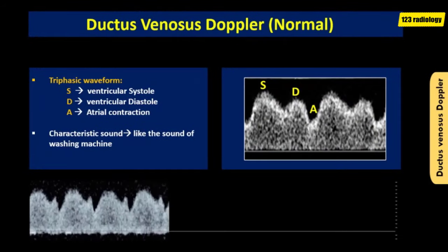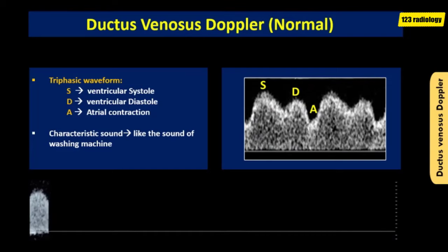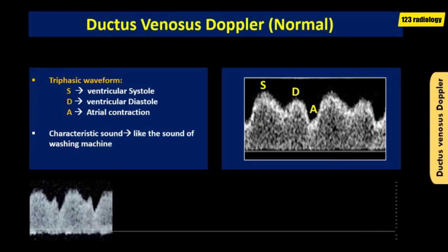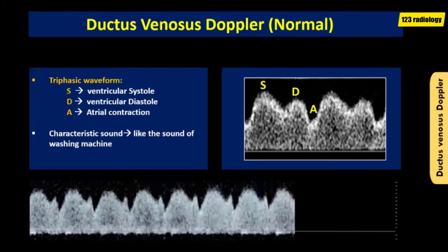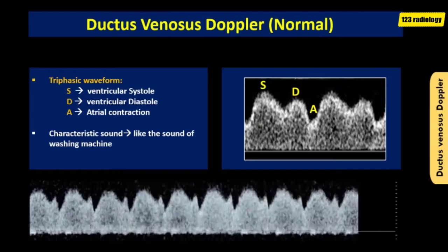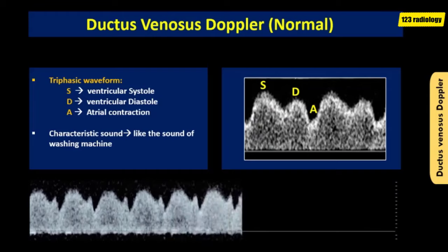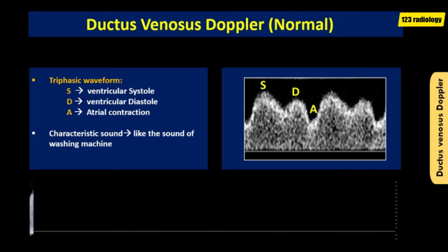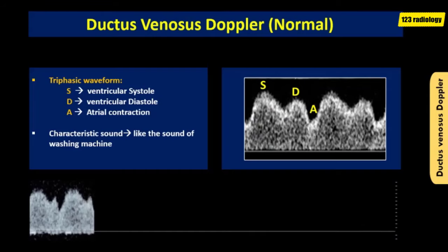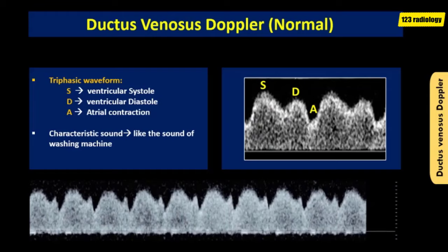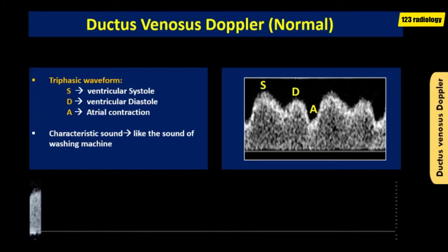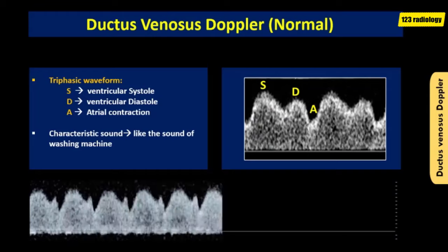The ductus venosus waveform has three components: the S wave, which reflects ventricular systole; the D wave, which reflects ventricular diastole; and the A wave, which reflects atrial contraction. The ductus venosus has a characteristic sound resembling the sound of a washing machine. Listening while sampling is helpful to confirm correct cursor placement.